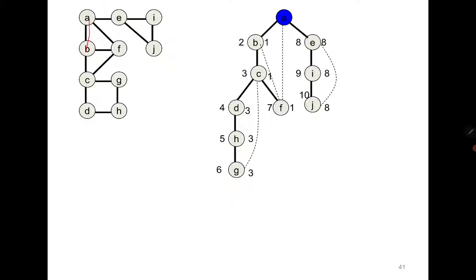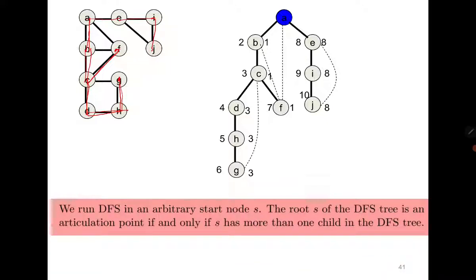If you apply DFS, one possible approach is: from A you move to B, then B to C, C to D, D to H, H to G. After reaching G there is no other option, so you return back and come to C. C has neighbor F; after F there is no other option, so from F you come back to C, go to B, then A. From A you go to E, E to I, I to J. Now a very interesting observation follows.